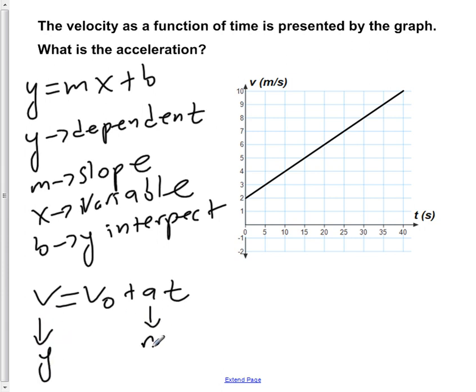Your a is m, your t is a variable x, and your v naught is your y-intercept in this case.